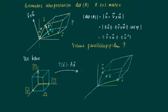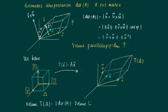What we see is that the blue unit cube is transformed using T into the parallelepiped on the right-hand side, of which we calculated the volume. So the volume of T(omega), where omega is the unit cube, is the determinant of A times the volume of omega, the unit cube, which is 1. So the determinant is actually the expansion factor of T.